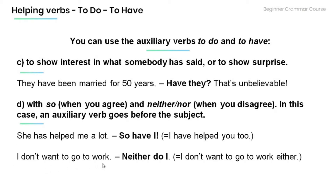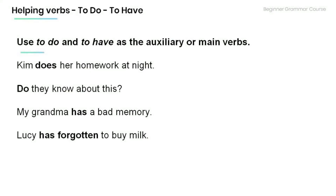'I don't want to go to work.' 'Neither do I,' meaning I don't want to go to work either. Now let's review the helping verbs 'to do' and 'to have' and practice a bit. Remember that we use 'to do' and 'to have' as auxiliary or main verbs. Read the following sentences and decide whether the helping verb is the auxiliary or main verb.